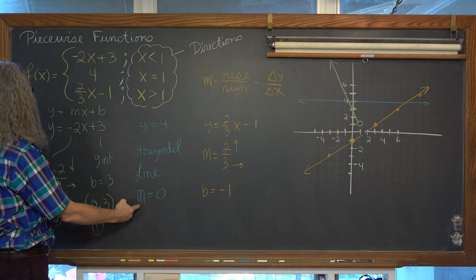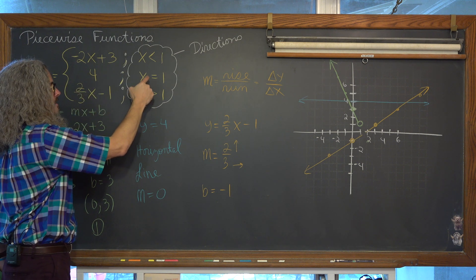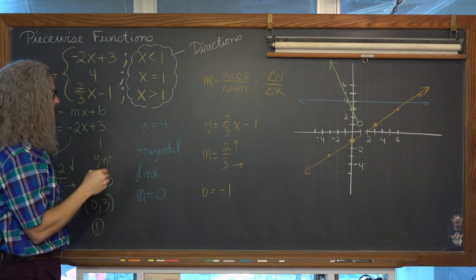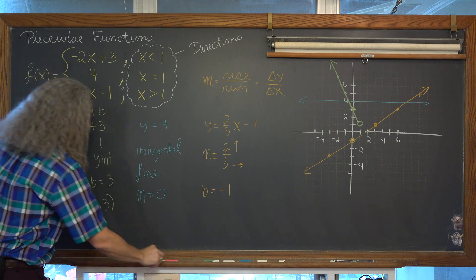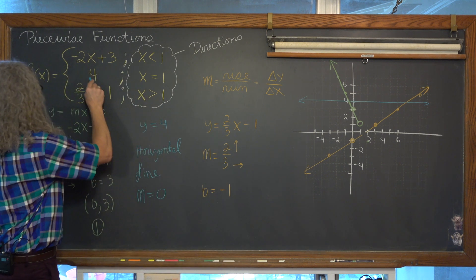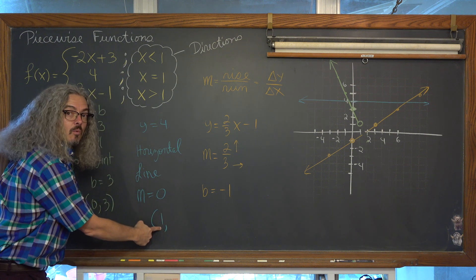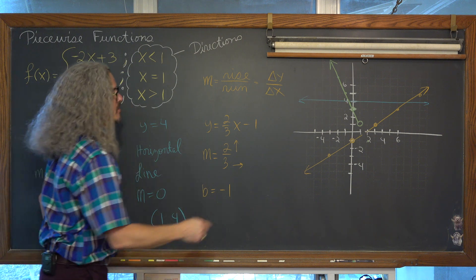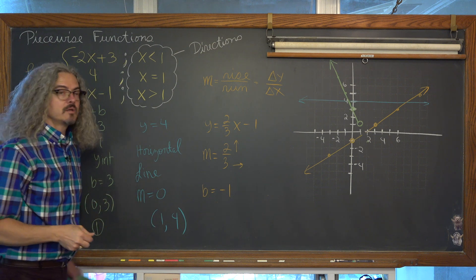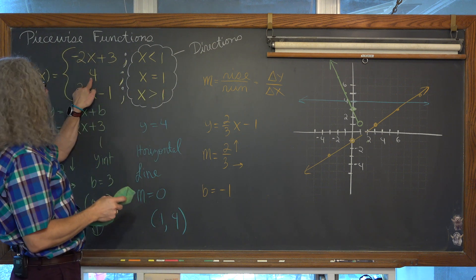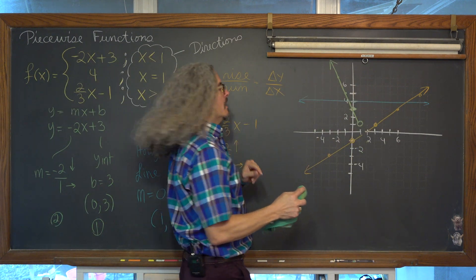The second part of this piecewise function is f of x equals 4 when x is equal to 1, and only at 1. While I reviewed how to graph a horizontal line, actually there's just a coordinate. The only place we let y equal 4 is when x is equal to 1. So the only part of that blue horizontal line that is allowed to be included is the coordinate (1, 4), because you only use the second part when x equals 1, not everywhere along the x-axis.